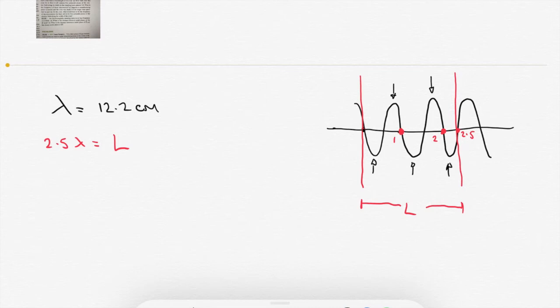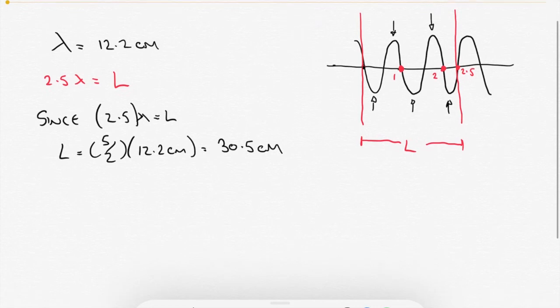You can call it the width if you like either. So what does that tell us then about the size of the microwave? Well, since then, two and a half lambda, so 2.5 lambda is equal to L, which we're calling the width of the microwave, then L is going to be equal to 5 over 2, so two and a half, times the 12.2 centimeter wavelength of the microwave, and that gives us a total of 30.5 centimeters.